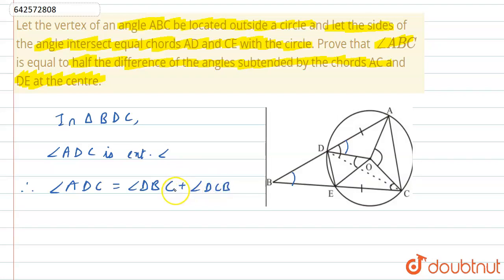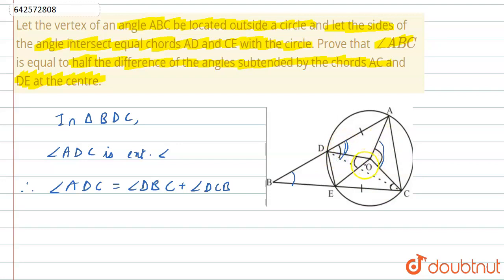This is because the measure of an exterior angle equals the sum of the two interior opposite angles. Now, we also know that angle ADC equals half of angle AOC — half of the angle subtended at the centre. This angle is half of that central angle.